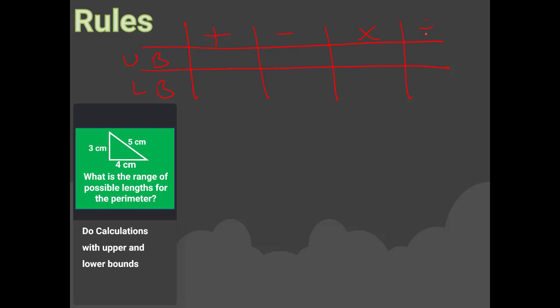For adding: to calculate the upper bound, add the upper bound to the upper bound. To calculate the lower bound, add the lower bound to the lower bound. For subtracting: to calculate the upper bound, take the upper bound minus the lower bound. To calculate the lower bound, take the lower bound minus the upper bound.